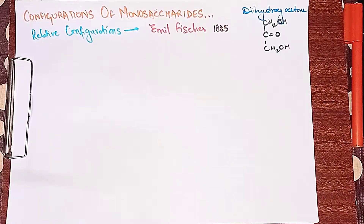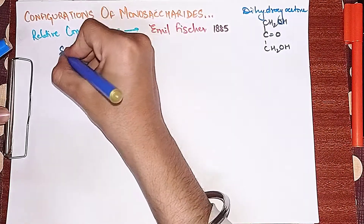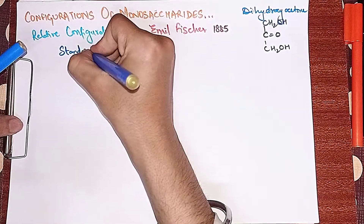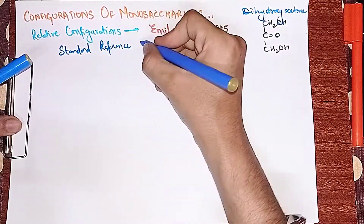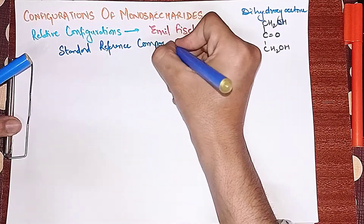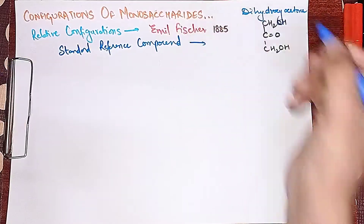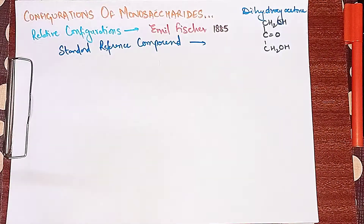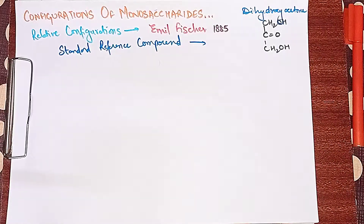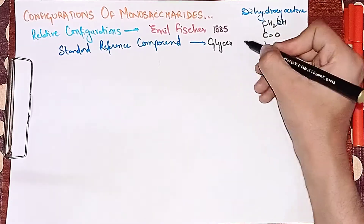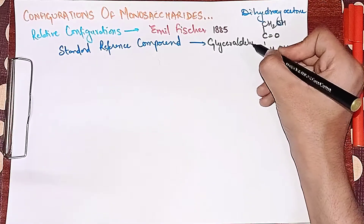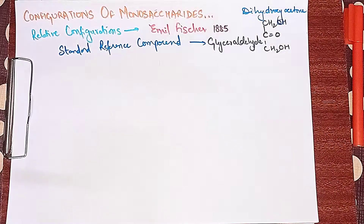Emil Fischer said that we have some relative configurations for our isomers. He took a standard reference compound. The standard reference compound he chose was Glyceraldehyde.